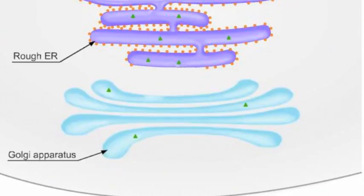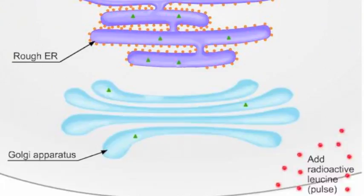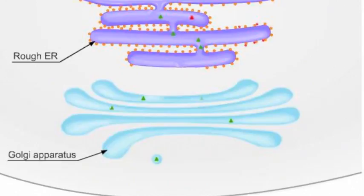Now, let's interpret the data for this pulse chase experiment using an illustration of a living cell. The green triangles represent digestive enzymes destined for secretion. The pulse phase of the experiment begins with the addition of a large dose of radioactive leucine to the cell's culture medium. The radioactive amino acids enter the cell and are incorporated into new proteins, indicated by the red triangles.